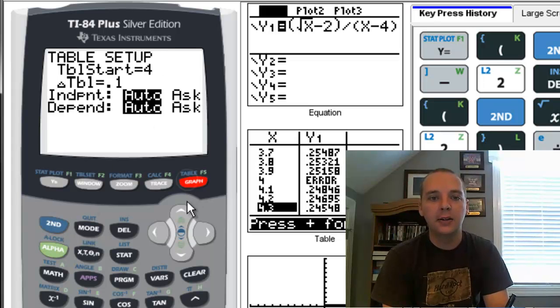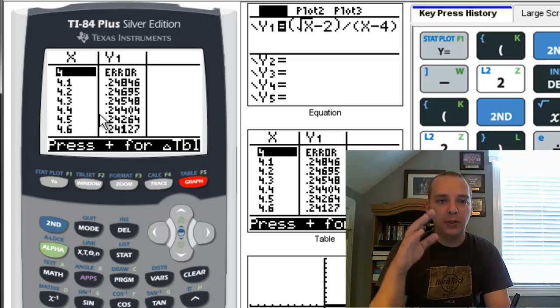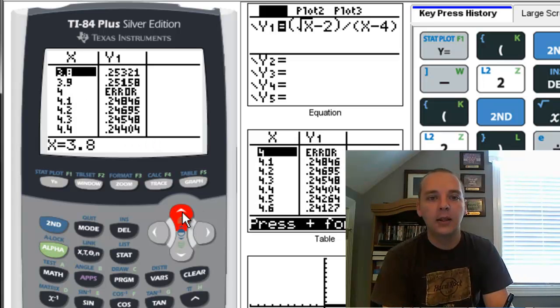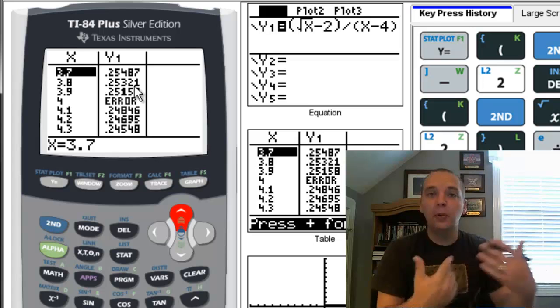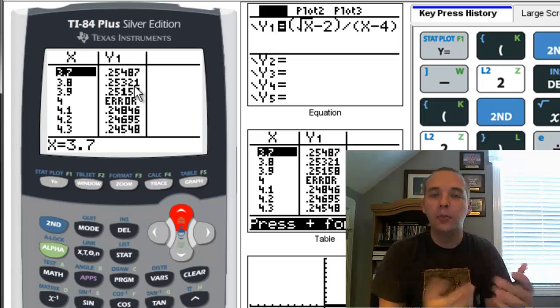So if we go to second table right here, you'll see it just plows through everything. I'll actually back up a little bit. And you can see something here—you see right here at 4 there's an error, because if you tried to plug in 4, the point was undefined at 4.